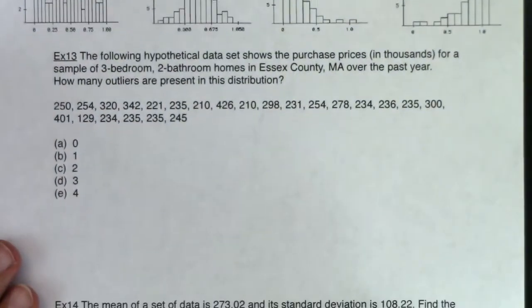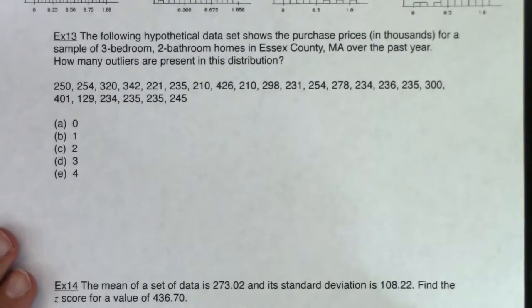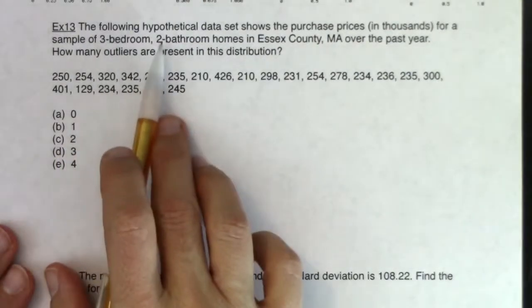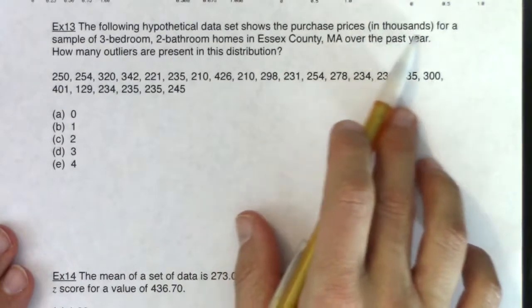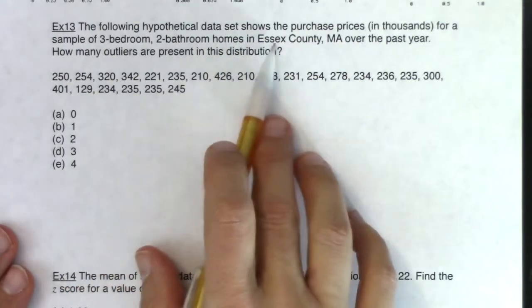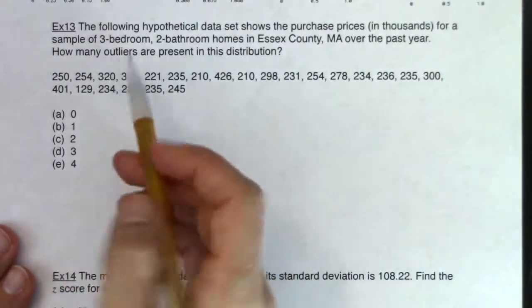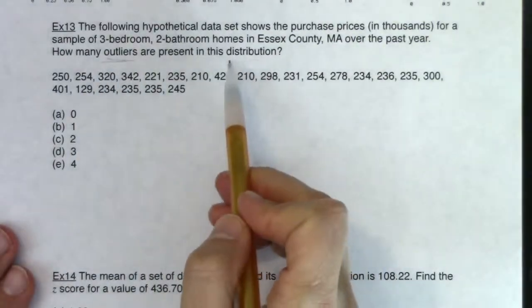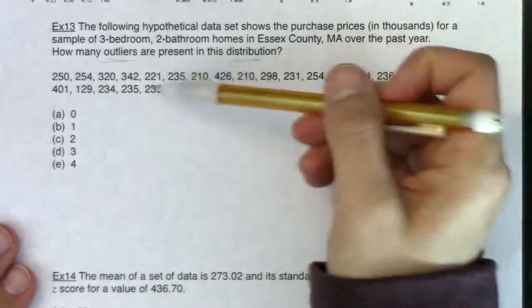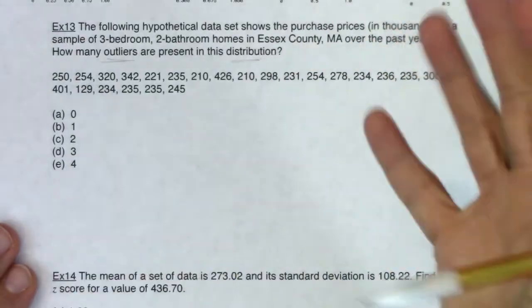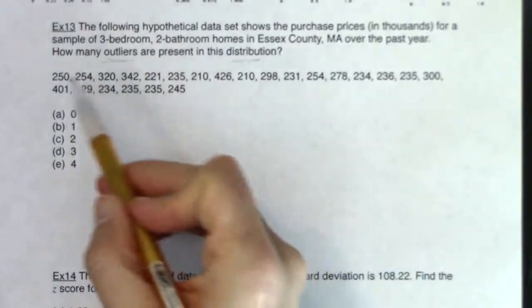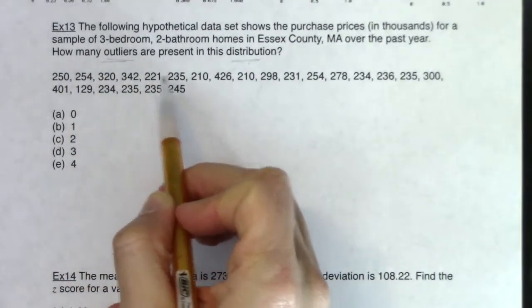All right, let's look at example 13 now. So as we start to look at example 13, let's read it, see if we can identify the variable in the problem. The following hypothetical data set shows the purchase prices in thousands for a sample of three bedroom, two bathroom homes in Essex County, Massachusetts over the past year. How many outliers are present in this distribution? So this distribution, this time they didn't give us a table or a graph, they gave us raw data. So we could make a graph, we just haven't seen that yet. But this is how the data was distributed.